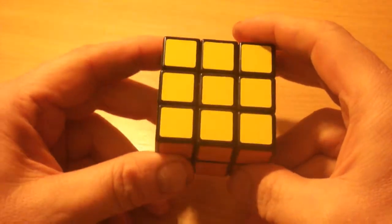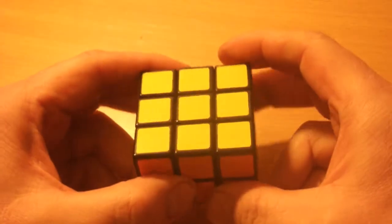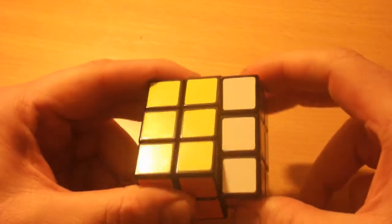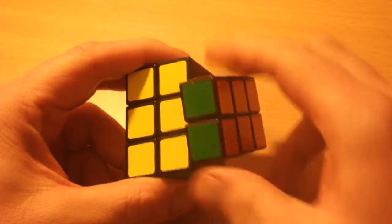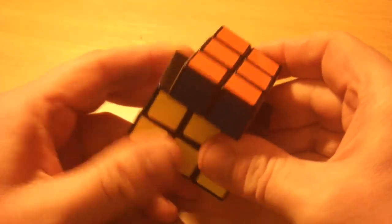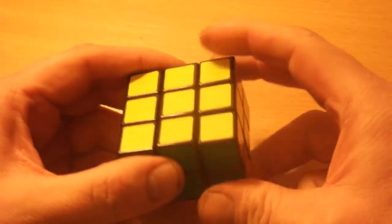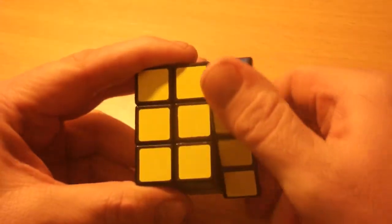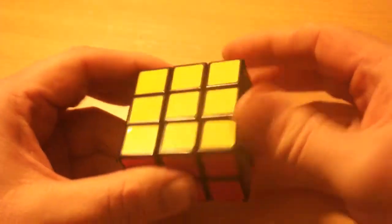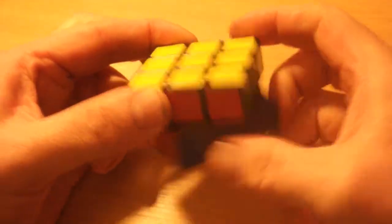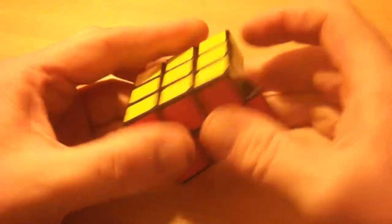Before we start actually solving this, I just need to go over a couple of things. First of all, you may well notice that you can only turn this side by 180 degrees. The 2x3 sides can only ever turn by 180 degrees. You can't turn them 90 degrees like you want on a regular Rubik's cube, they just won't turn. So whenever you turn these sides, it's always going to be 2 turns as compared to a Rubik's cube. This top face, and this bottom face, you can turn by 90 degrees, just like any other Rubik's cube.